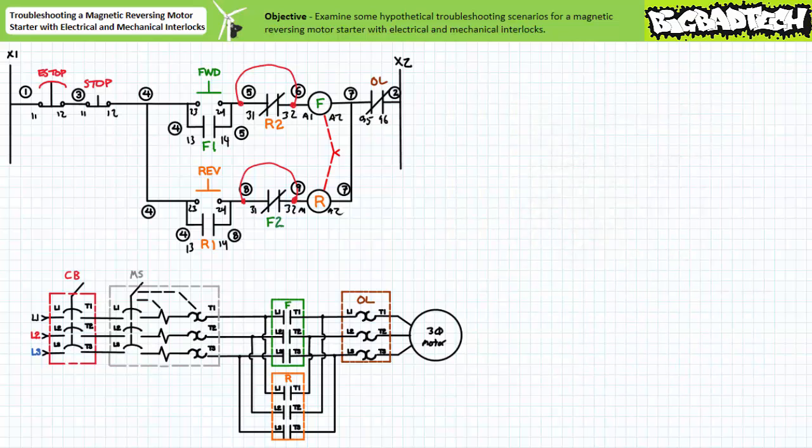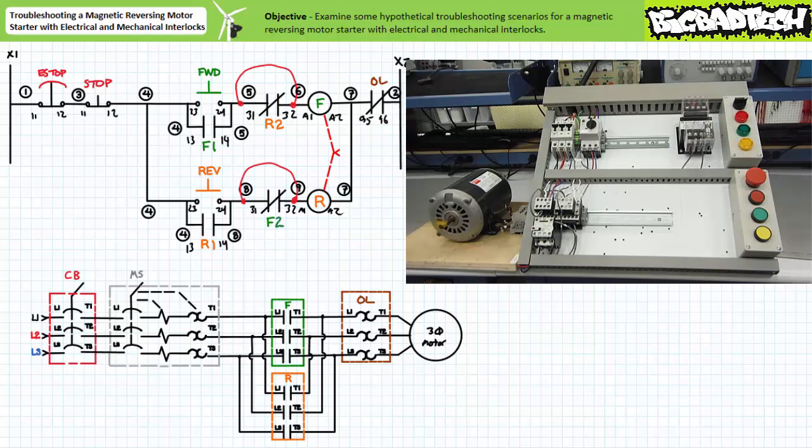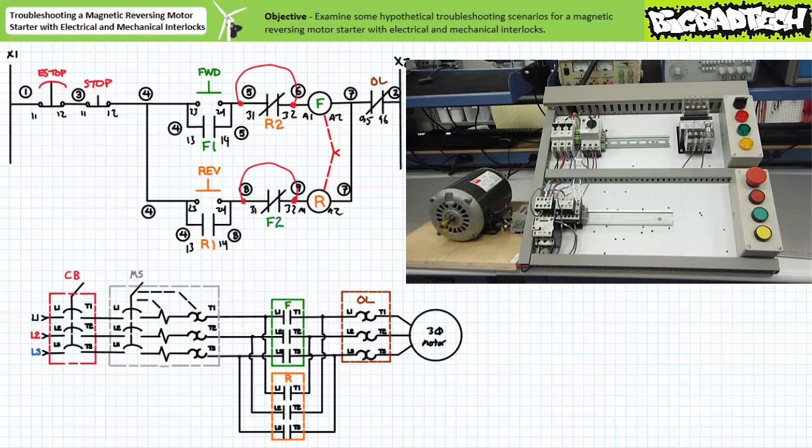When the system is placed in forward mode, the forward contactor closes as expected. Note, however, when I press reverse, the reversing contactor coil is energized because no electrical interlock prevents this from happening. However, the mechanical interlock prevents the reversing contactor carrier from moving. This sound is a dead giveaway that something stupid is about to go down and the mechanical interlock is doing its best to keep it from happening.